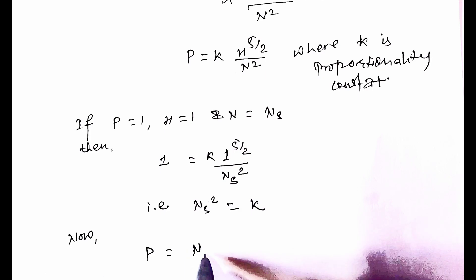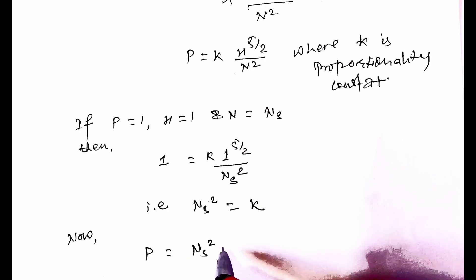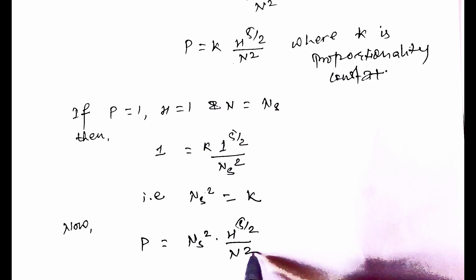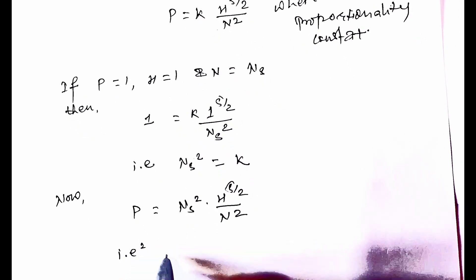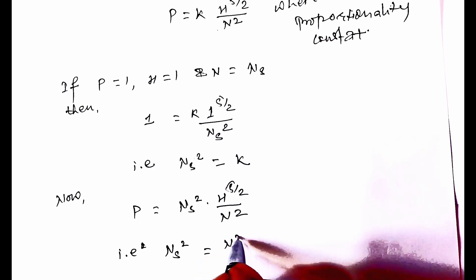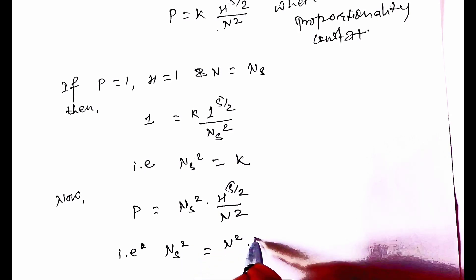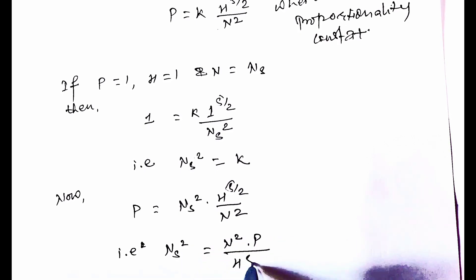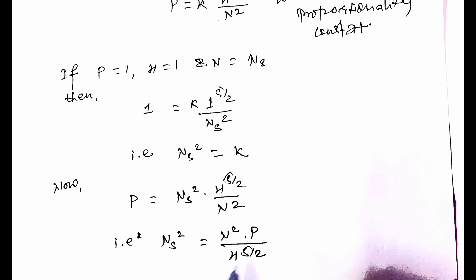Substituting K back, we get: Ns squared equals N squared · P / H to the 5/2. Therefore, Ns equals N · square root of P divided by H to the 5/4.